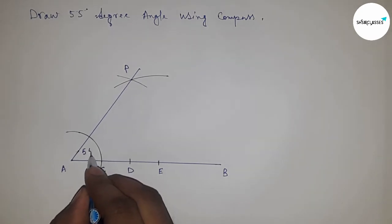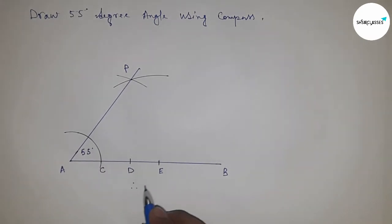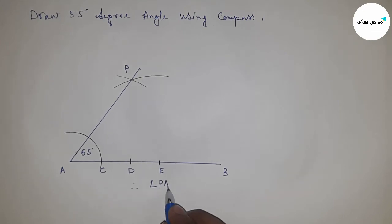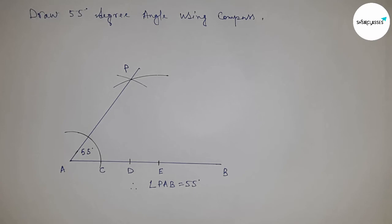Therefore, angle PAB equals 55 degree angle. That's all, thanks for watching. Please subscribe, like, and comment on my video. Thanks for watching.